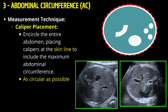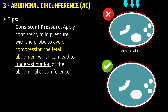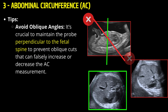Measurement technique for AC: Encircle the entire abdomen, placing calipers at the skin line to include the maximum abdominal circumference. Apply consistent, mild pressure with the probe to avoid compressing the fetal abdomen, which can lead to underestimation of the abdominal circumference. It's crucial to maintain the probe perpendicular to the fetal spine to prevent oblique cuts that can falsely increase or decrease the AC measurement.